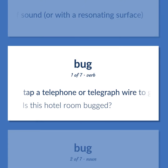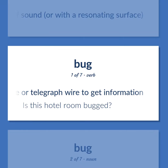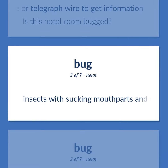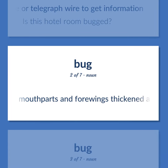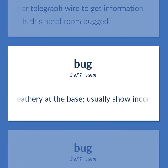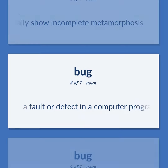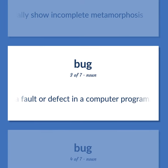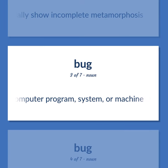Bug (verb): to tap a telephone or telegraph wire to get information. Example — 'Is this hotel room bugged?' Bug (noun): a fault or defect in a computer program, system, or machine.